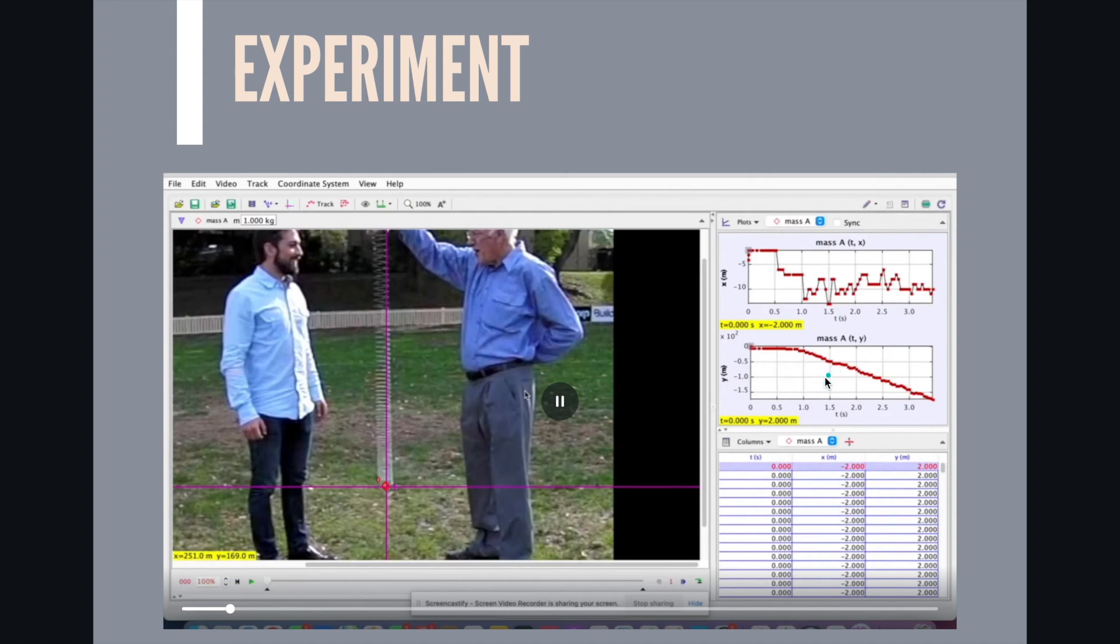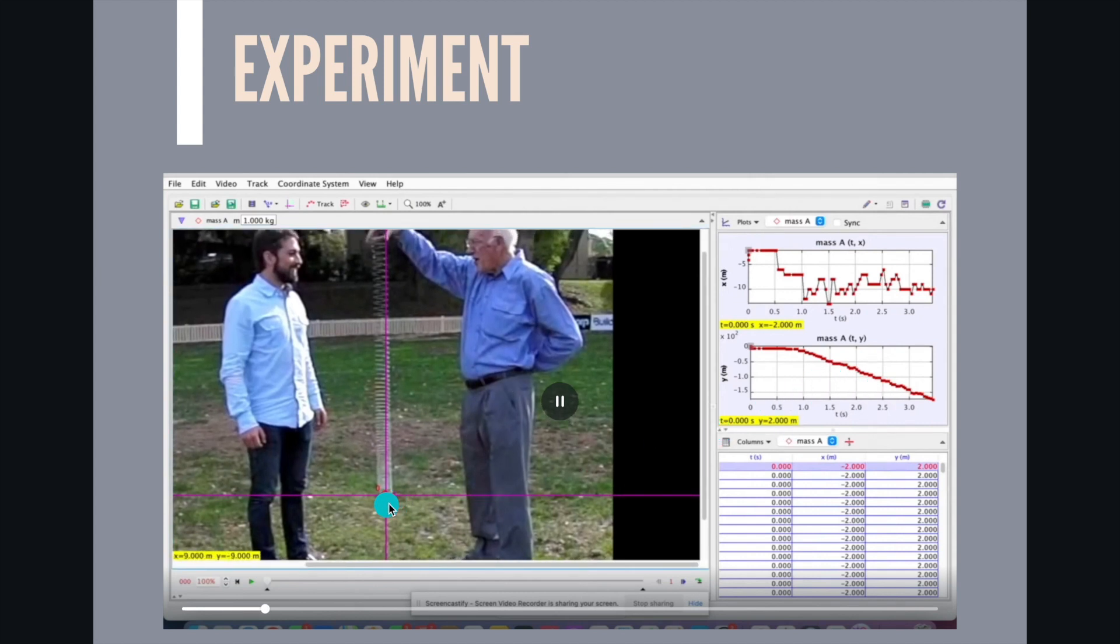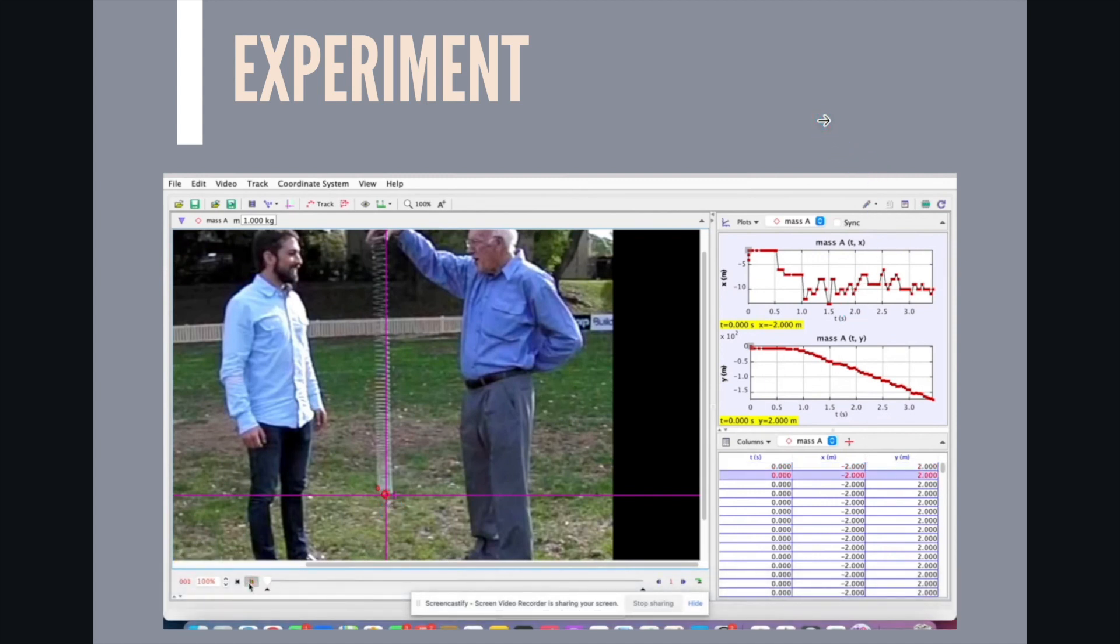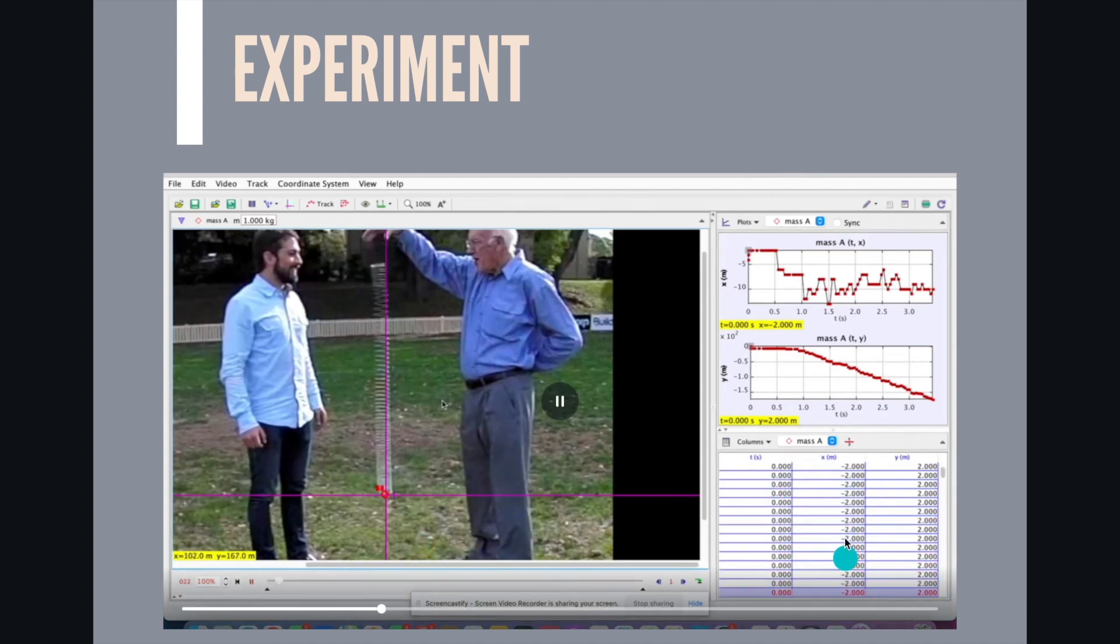This is the experiment in tracker. We set the origin as the bottom of the slinky at zero zero. And when we put play here we have the data that is being collected as the slinky falls.